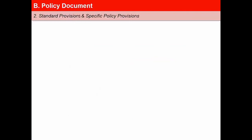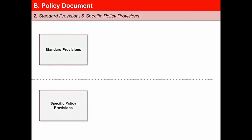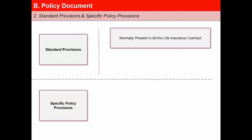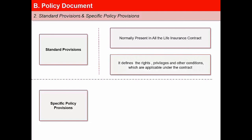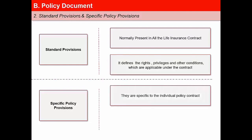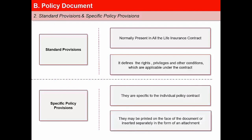The other two parts of the policy document are standard policy provisions and specific policy provisions. Standard policy provisions are normally present in all life insurance contracts unless specifically excluded. They define the rights, privileges, and other conditions applicable under the contract. Specific policy provisions are specific to the individual policy contract and may be printed on the face of the document or inserted separately as an attachment. These provisions are generally linked to the particular contract between the insurer and the insured.